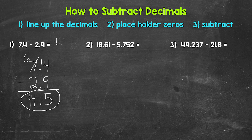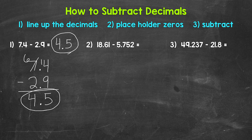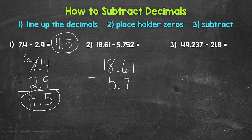So 7 and 4 tenths minus 2 and 9 tenths equals 4 and 5 tenths. Let's move on to number 2, where we have 18 and 61 hundredths minus 5 and 752 thousandths. So let's line this problem up: 18 and 61 hundredths minus 5 and 752 thousandths.